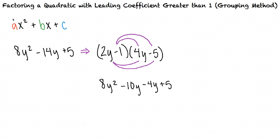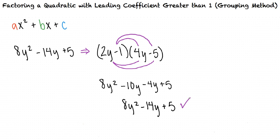When we multiply our factors together, we get 8y squared minus 10y minus 4y plus 5. When we combine like terms and simplify, we get 8y squared minus 14y plus 5, which is the same as our original quadratic expression that was given. This tells us that we've done our factorization correctly.